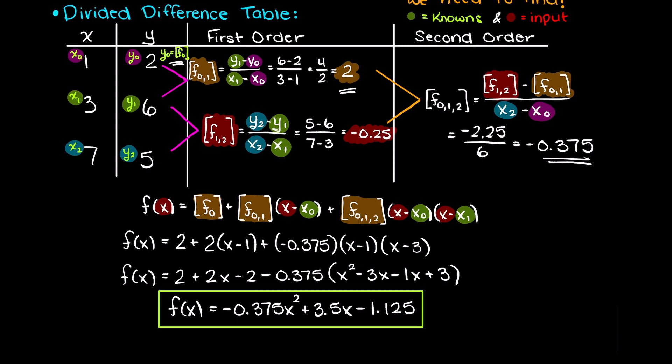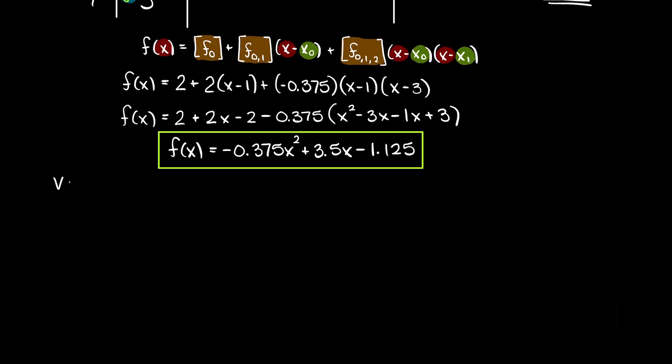This is the formula for the continuous polynomial function that fits our discrete data set. We can validate this function at our known data inputs as this function will return our outputs if it is correct. So I will just go ahead and complete that for you now.